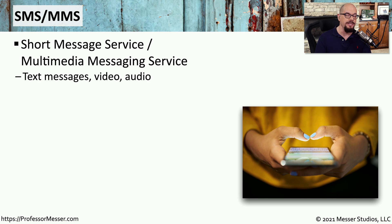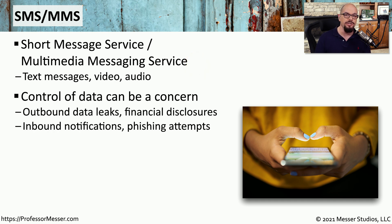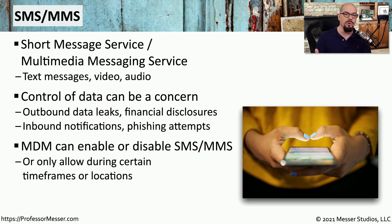One way users can transfer data off their mobile device is by using SMS and MMS — short message service and multimedia message service — which we often just refer to as texting. These text messages can contain pictures, audio, movies, and other types of data, so they can be used for outbound data leaks or disclosure of financial information. We've also seen these text messages used for inbound attacks, where attackers try to obtain access to a system using phishing techniques. Just like the controls available for the camera, the mobile device manager can also control the MMS and SMS functionality, so text messaging may be disabled completely or only available when you're in certain areas.